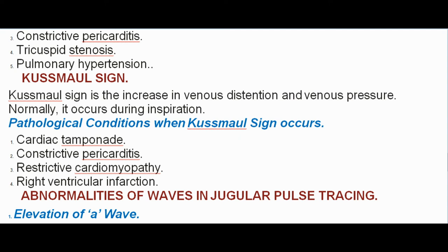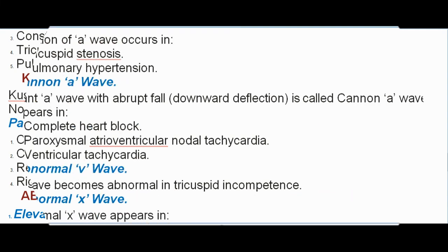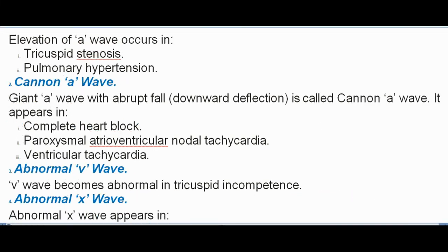Abnormalities of waves in jugular pulse tracing. Elevation of A wave occurs in tricuspid stenosis and pulmonary hypertension.